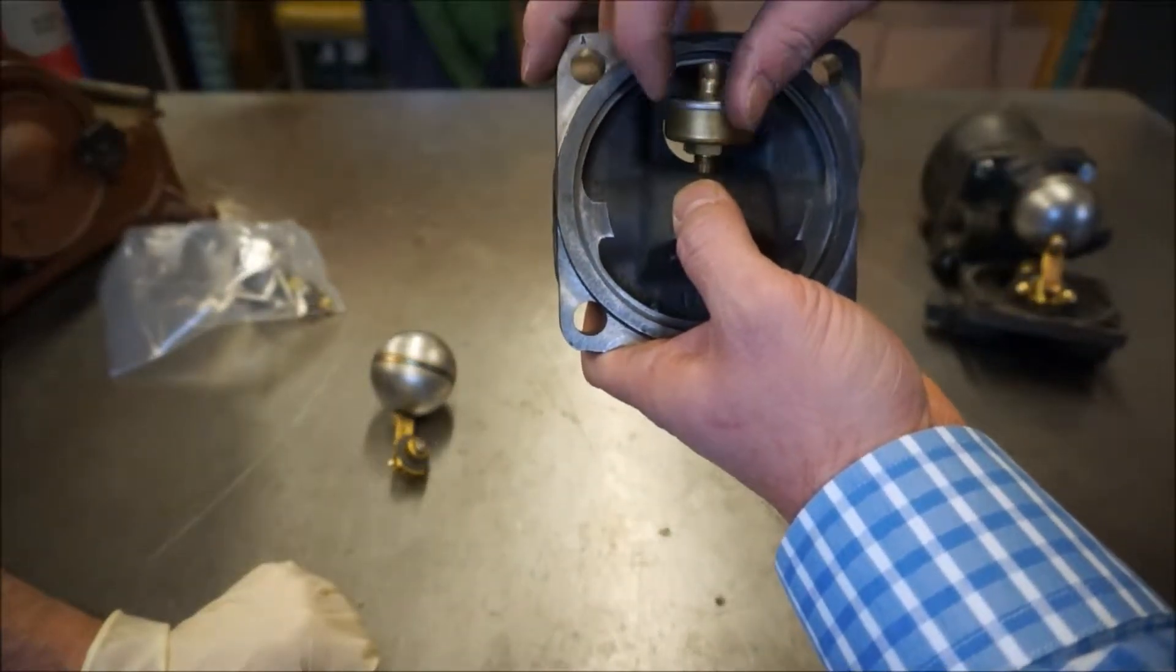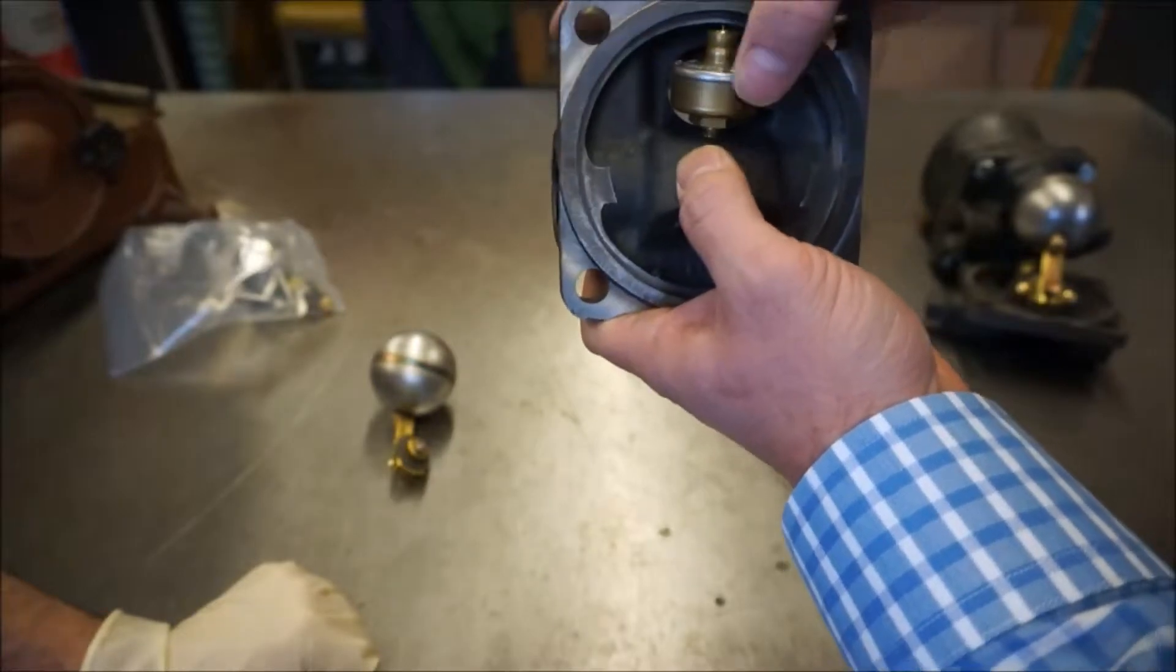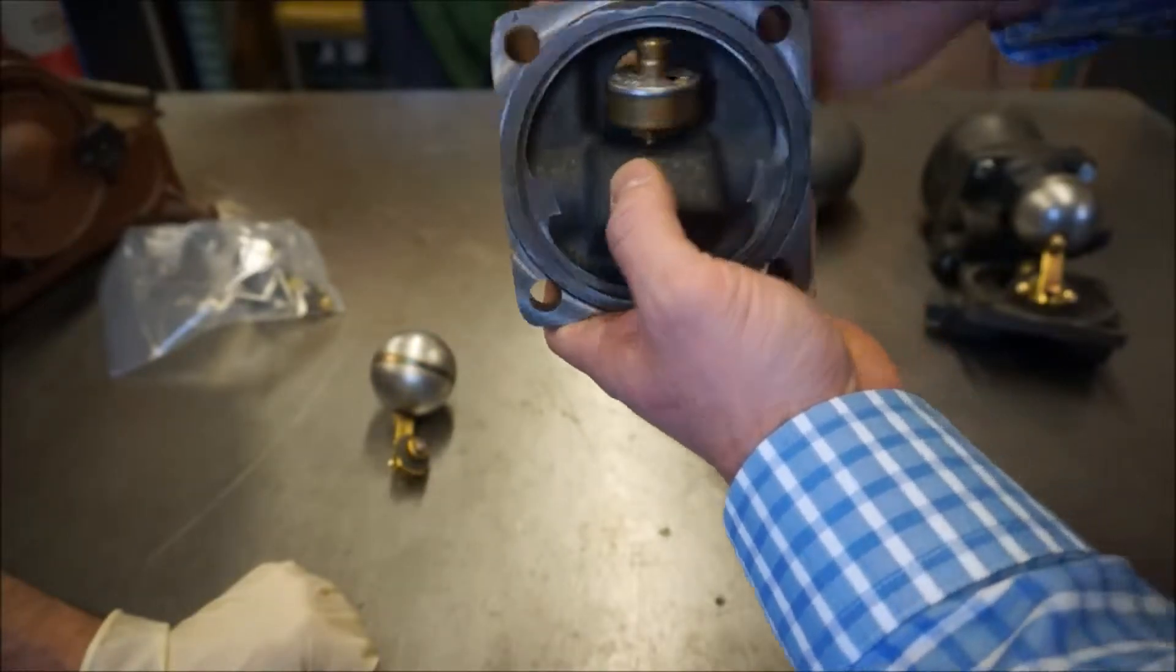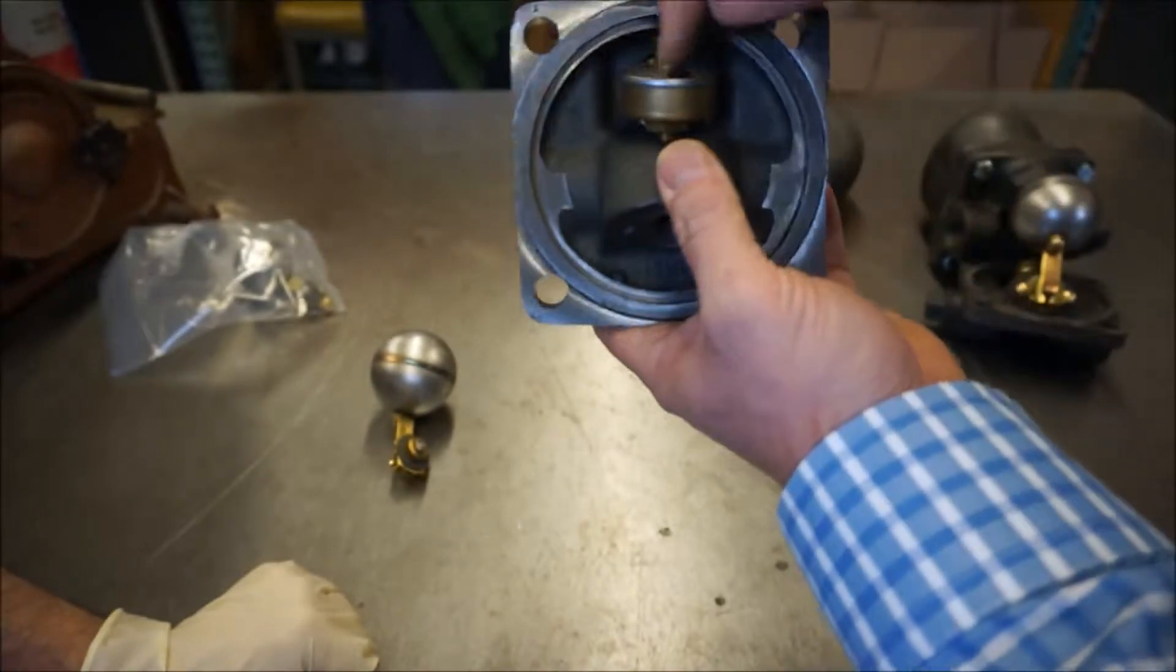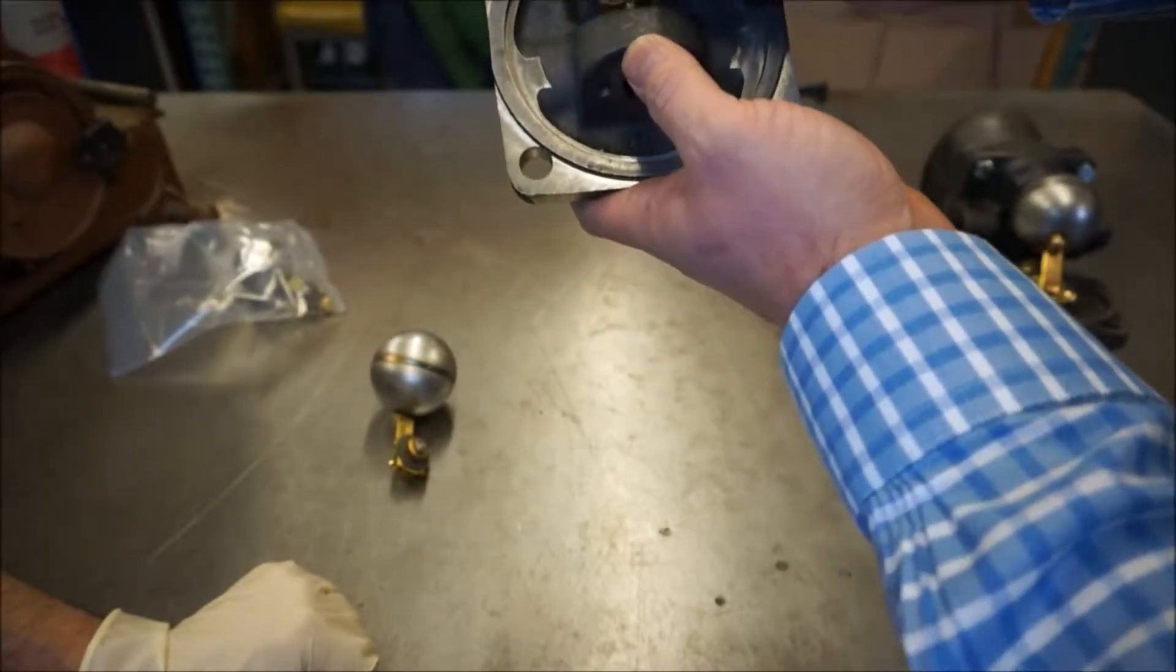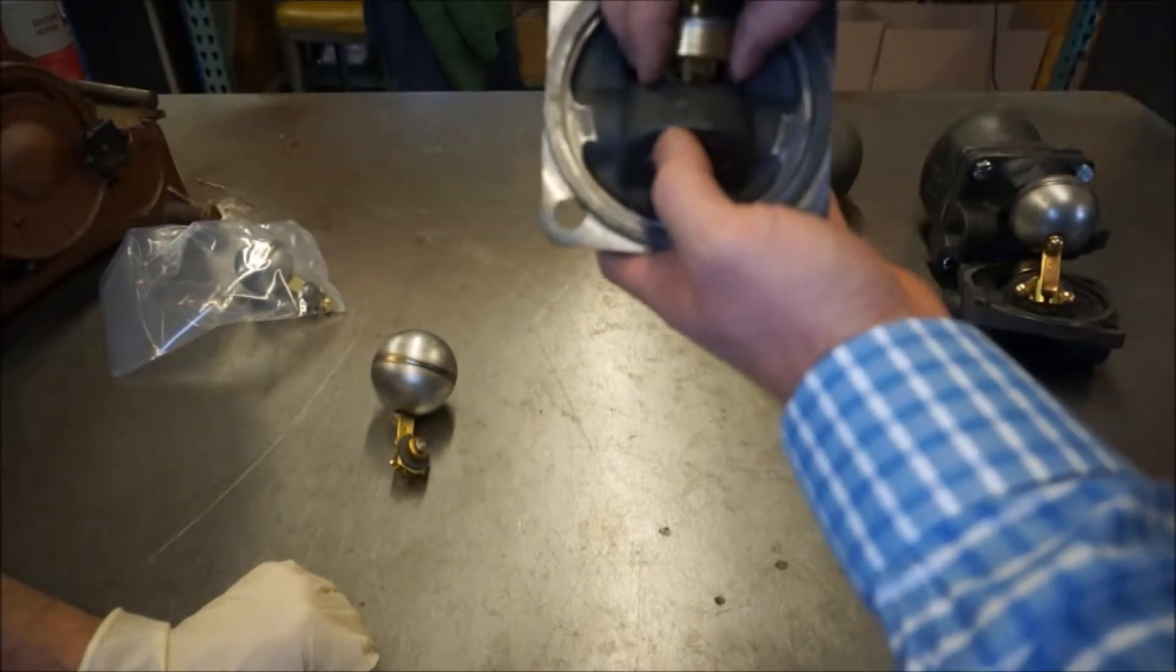And so when steam comes in the inlet here and hits this cage unit, it seals closed and shuts this off.